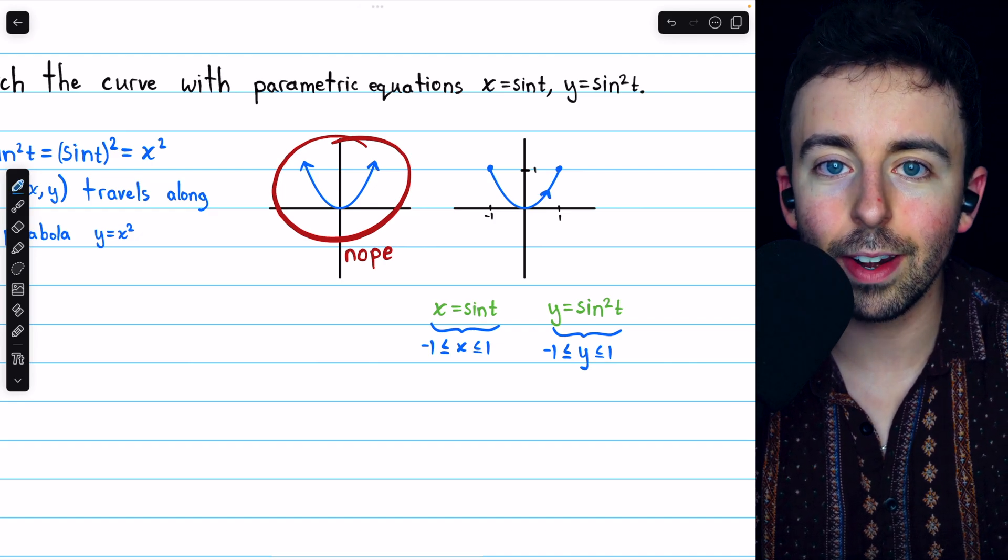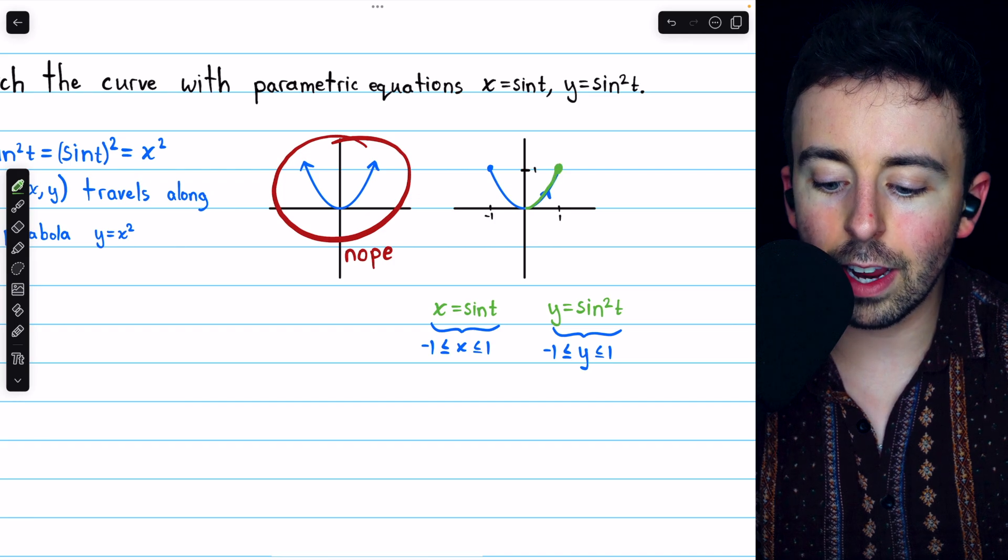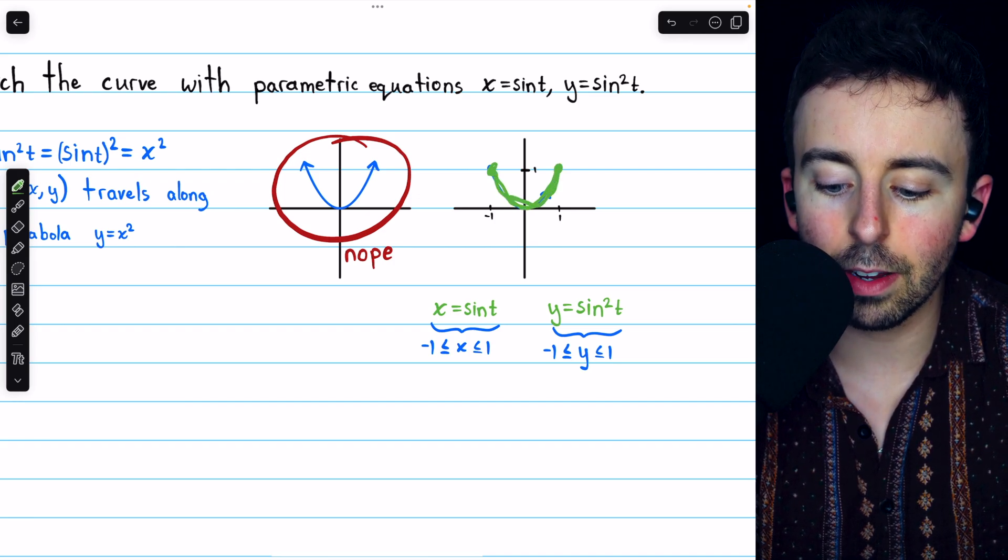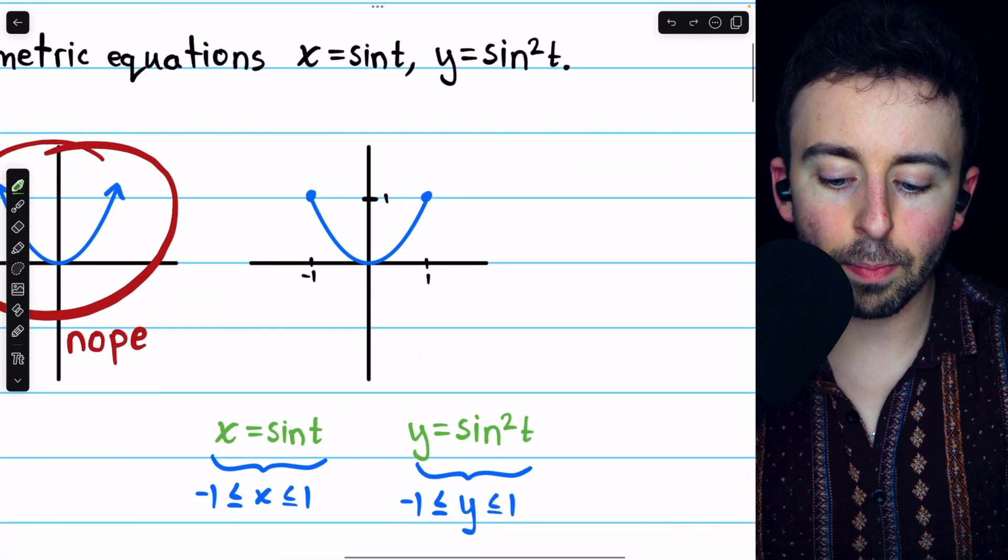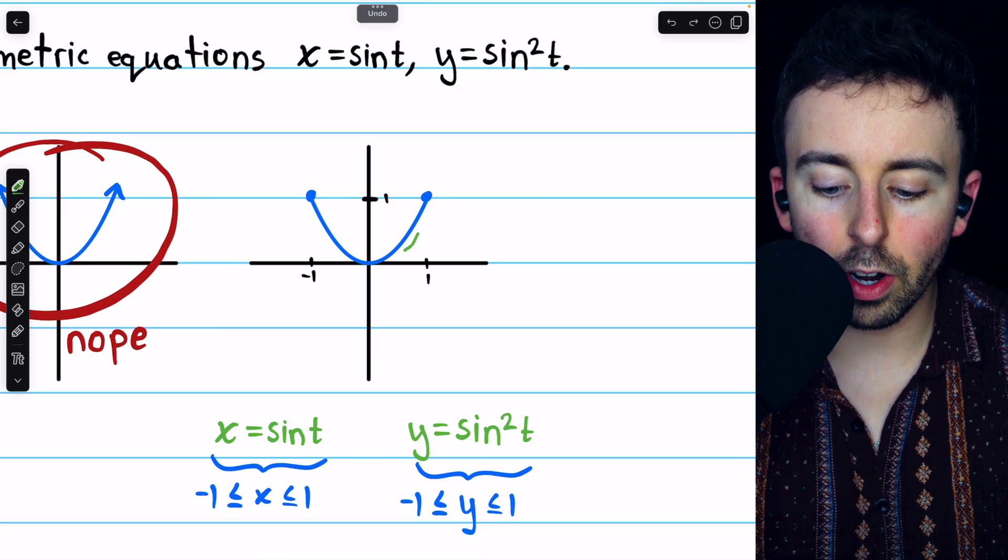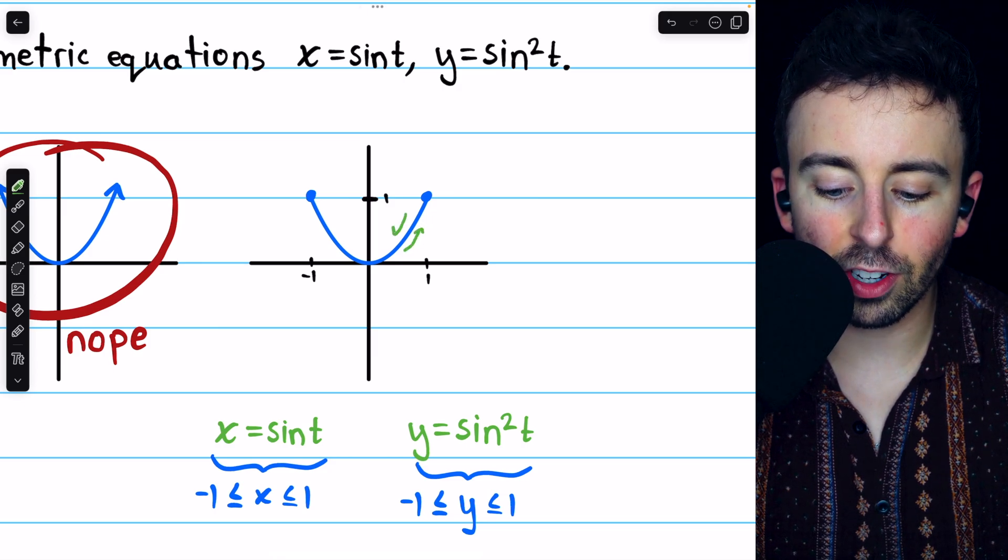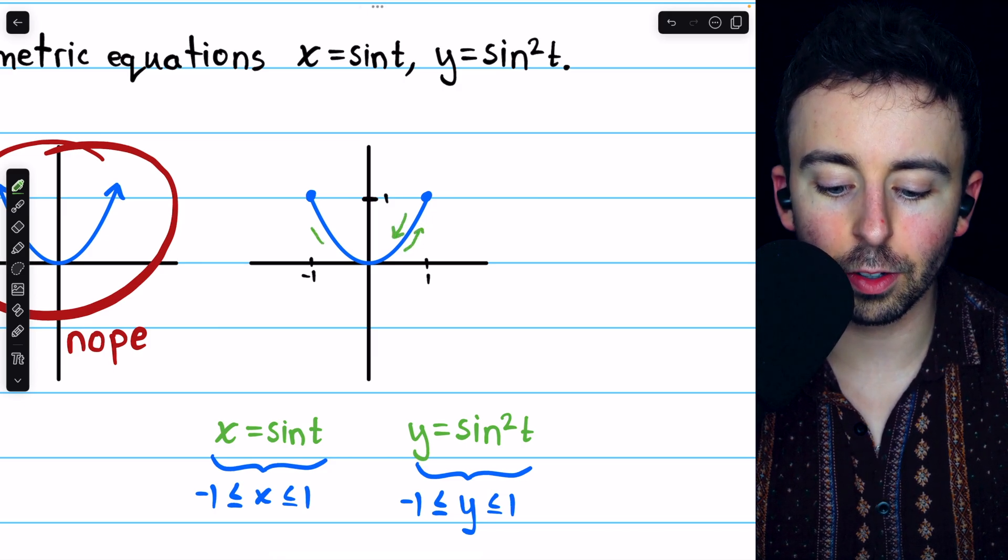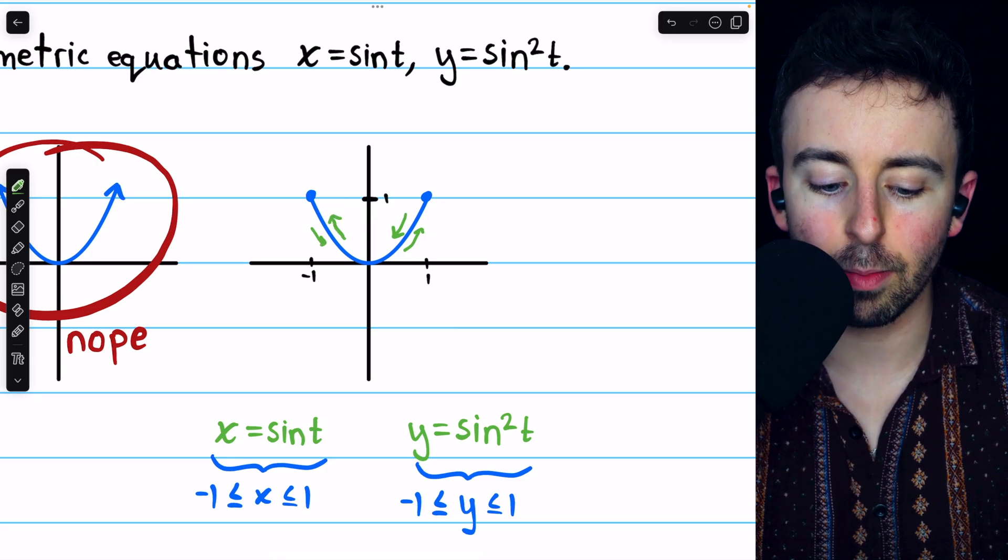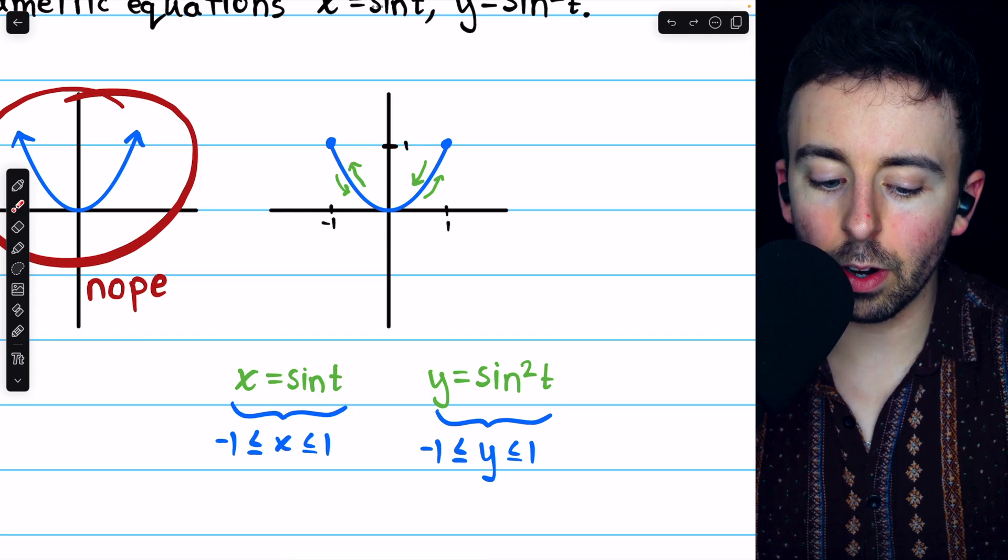But once the particle gets over there, it will make its way back, and then it will continue bouncing back and forth along the parabola. So, because the particle will travel in both directions along this curve, I don't want to draw a single arrow suggesting that it only goes a single direction. Drawing a few arrows like this more accurately communicates what's happening. The particle goes back and forth, and this is an accurate sketch of the parametric curve.